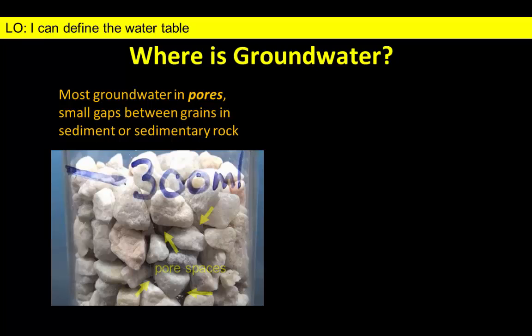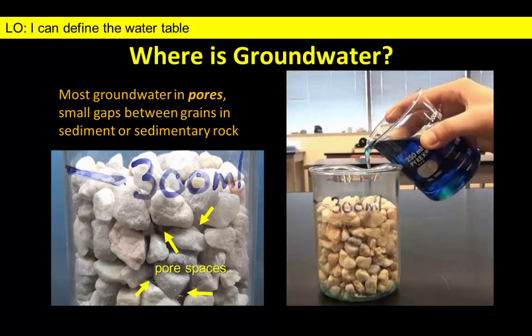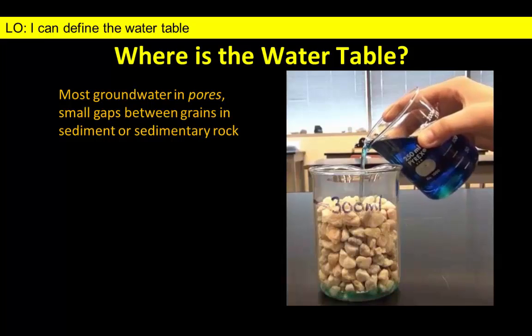As water infiltrates into the ground, it fills up connected spaces in sediment or rock formed by fractures or small gaps between grains known as pores. We are going to add colored water to this gravel-filled beaker to illustrate how the position of the water table is dependent upon which pore spaces are filled with water.